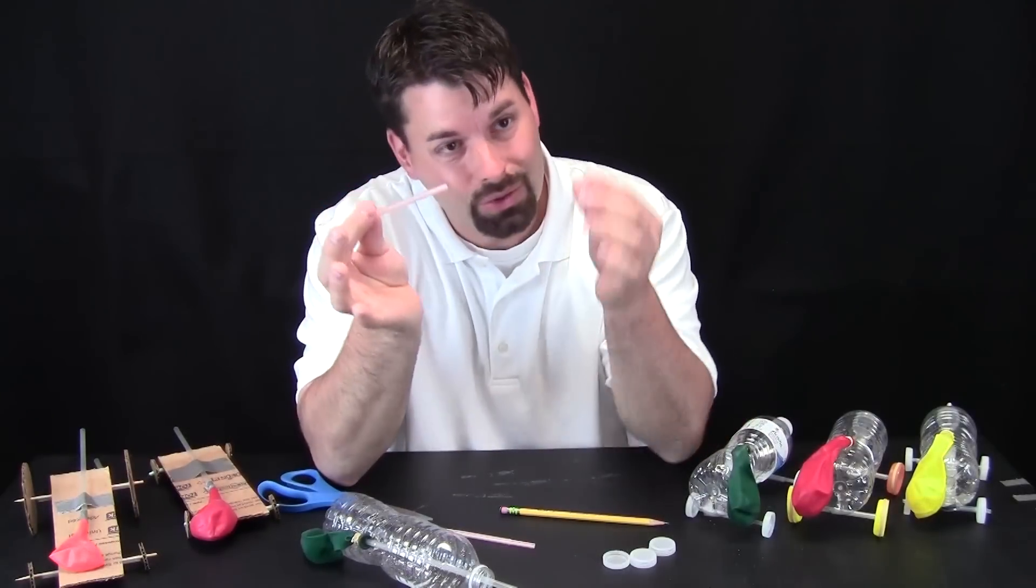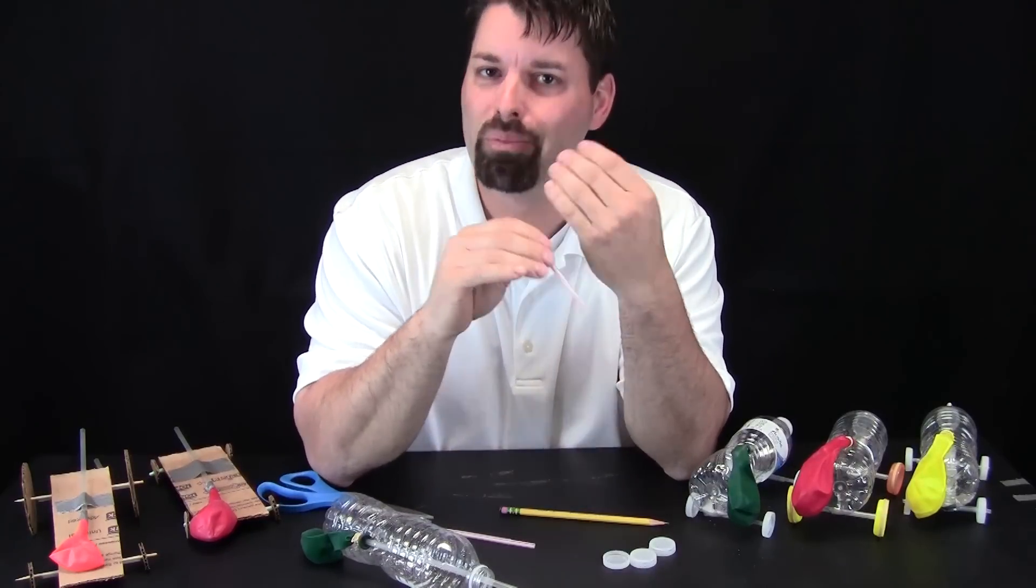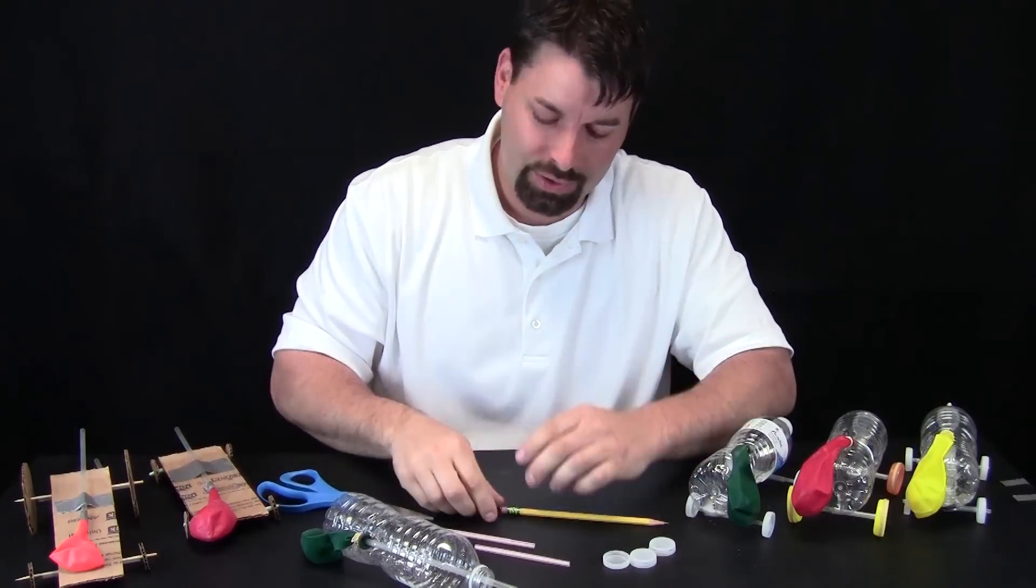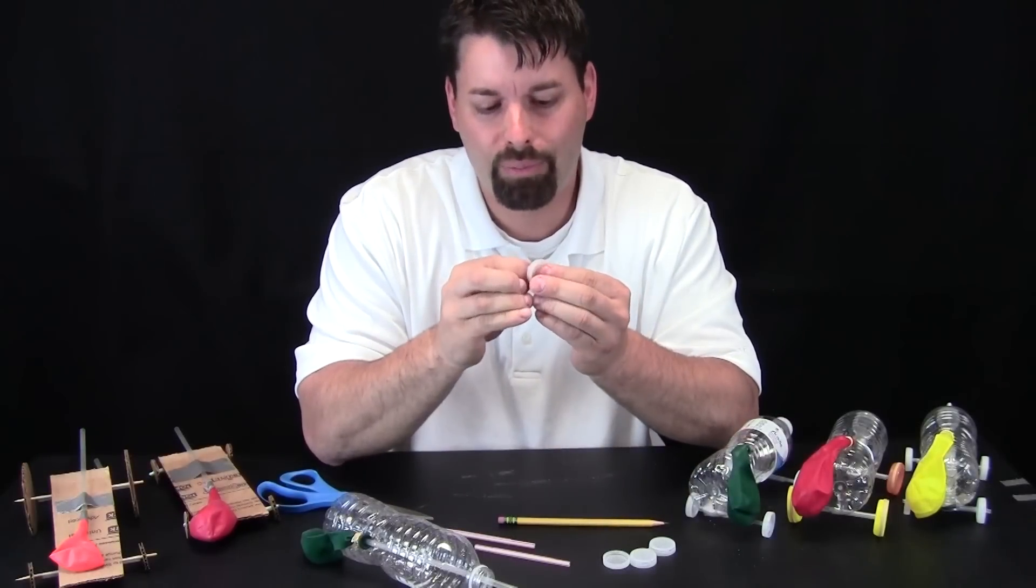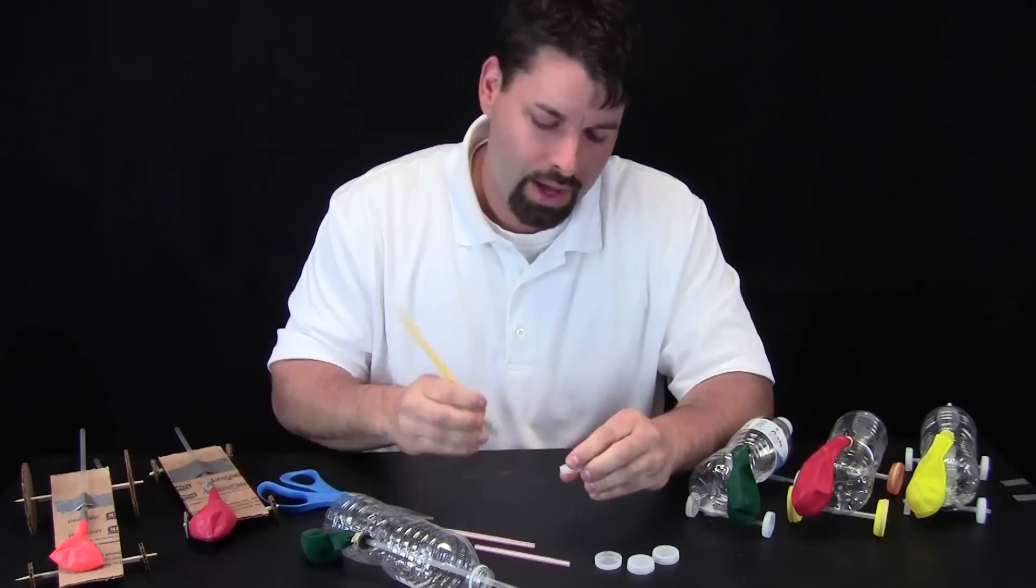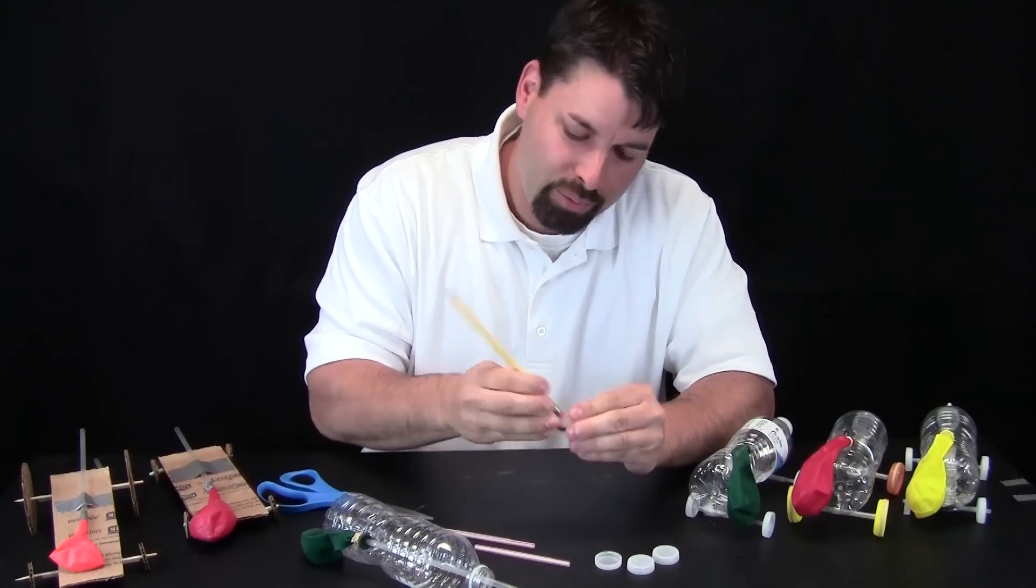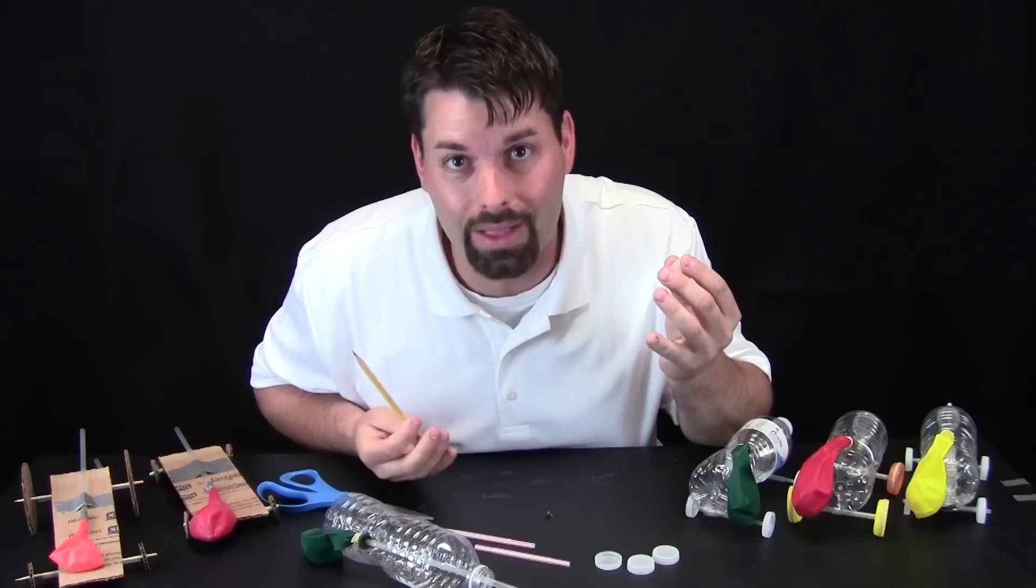So how do we attach our axle to our bottle cap wheel? Well, we need to make a hole and then we need to make that hole bigger. How? Simple materials. We start with our thumbtack. We find pretty much the center of the bottle cap. We push it through. I like to use the pencil eraser to push that thumbtack back out. And I have a tiny, tiny hole.